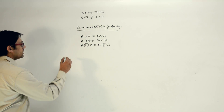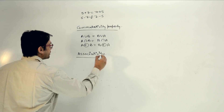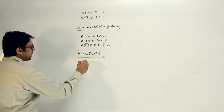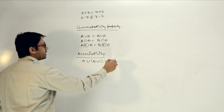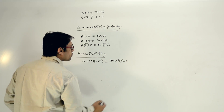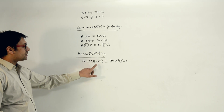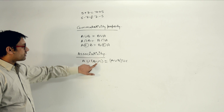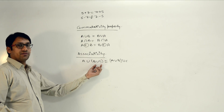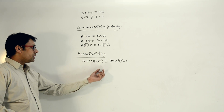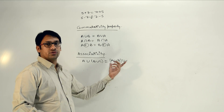The next property is the associativity property. What is associativity? If you do A union (B union C), then it is equivalent to (A union B) union C. When we put brackets, we are increasing the priority of that operator. In the first case we calculate B union C and then do a union with A; in the second case we calculate A union B first and then union with C.